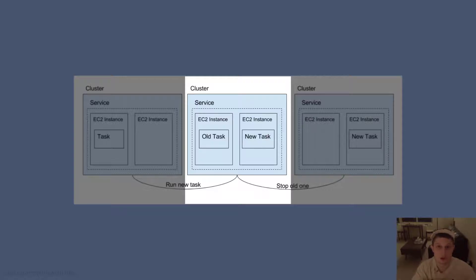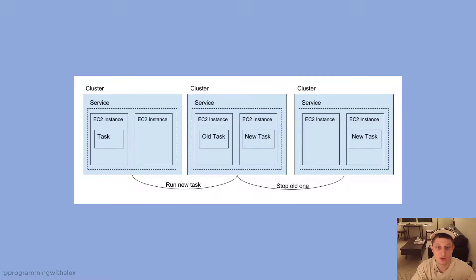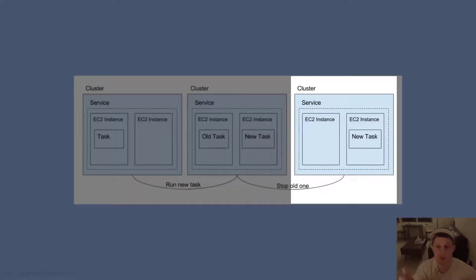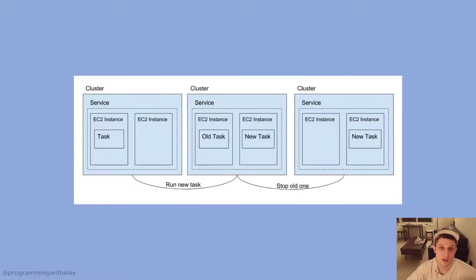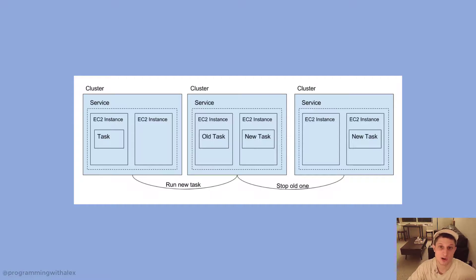Once the new task is ready, the old task starts deregistering and all traffic flows to the new task, which we see in the final diagram where only the new task is running. This is how we can work with our CI/CD pipeline to automate deployments to our app on AWS with zero downtime.